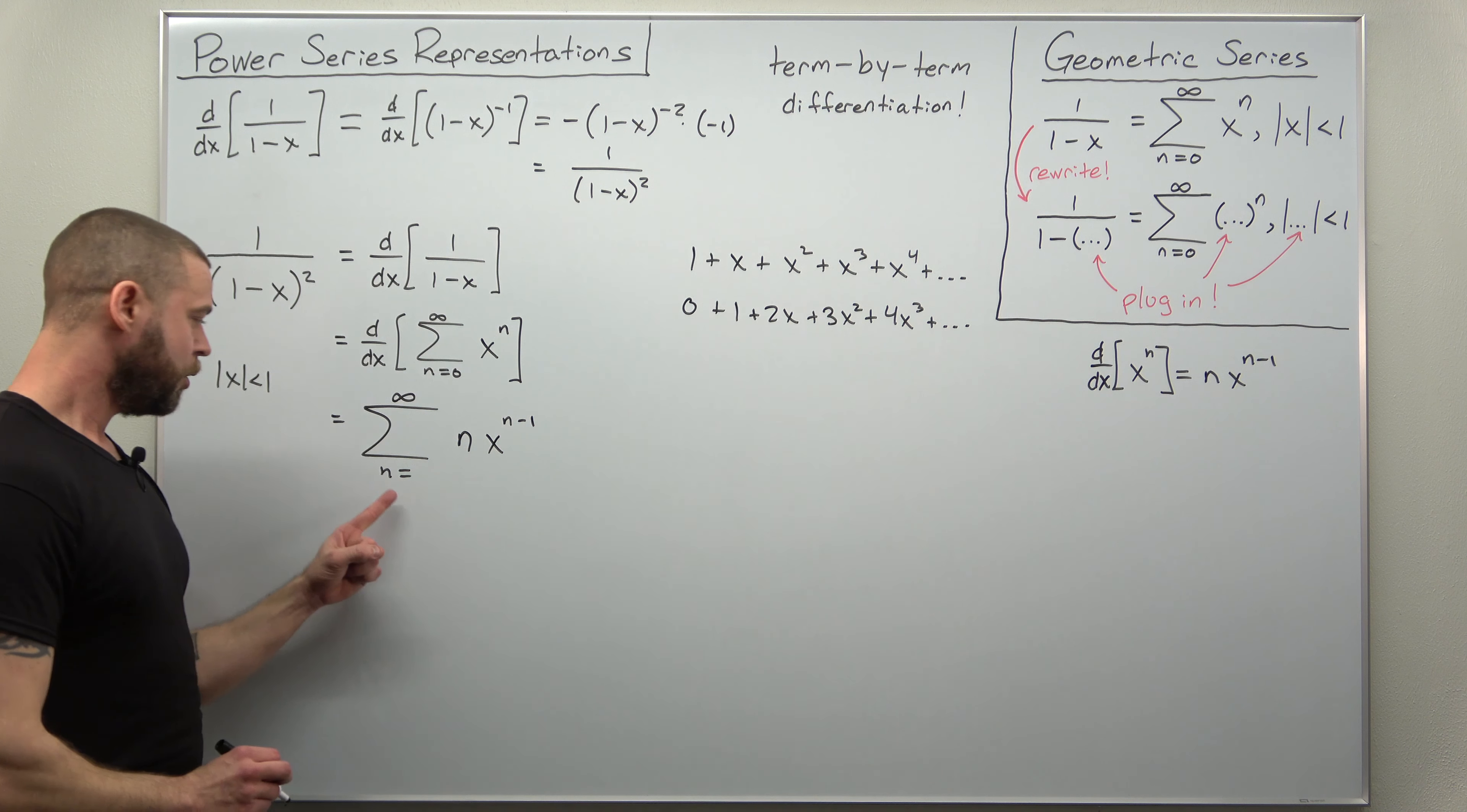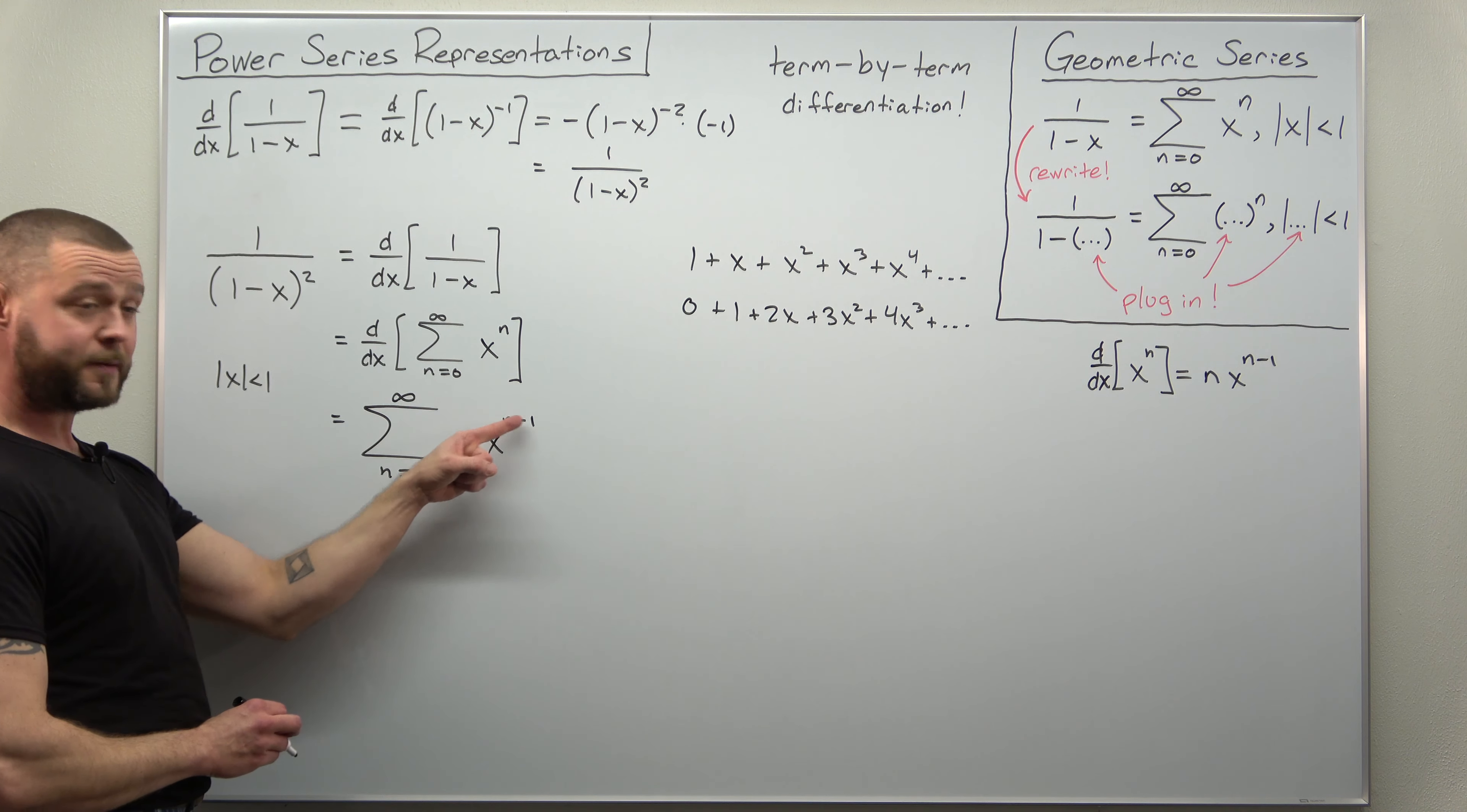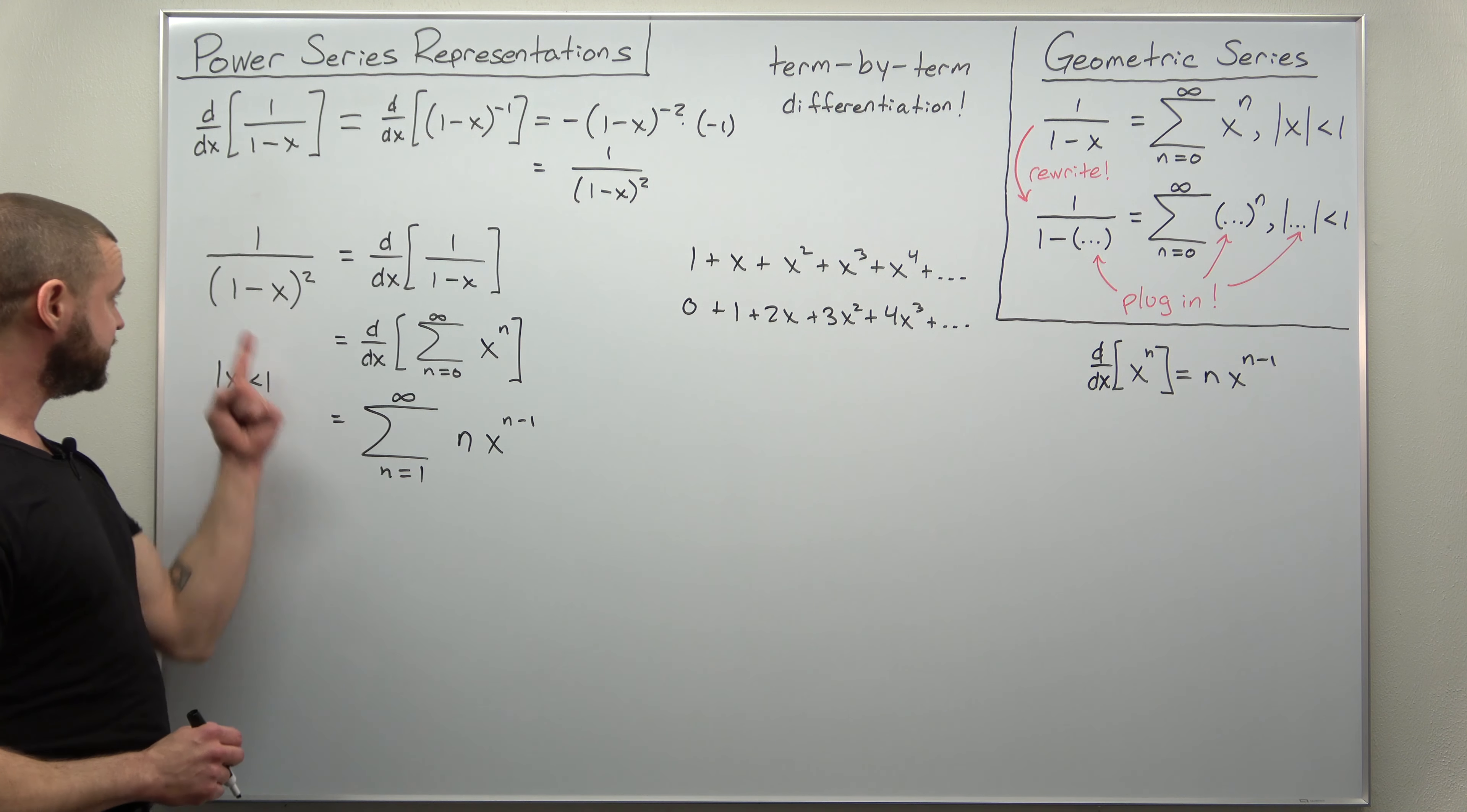And let's try to determine what value of n we should start with. Now if you take a look at the non-zero terms here, your first term is 1. What value of n would make this give 1? Well it looks like we'd have to start with n equals 1, you would get x to the 1 minus 1, x to the 0 which is 1. When you differentiate term by term typically your starting index changes, that's just to account for your terms left after you've differentiated. And that's basically our power series for that function.